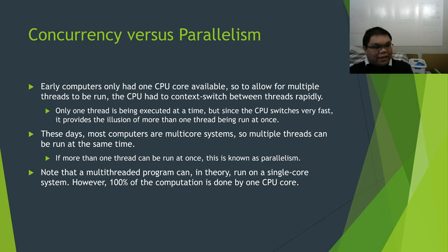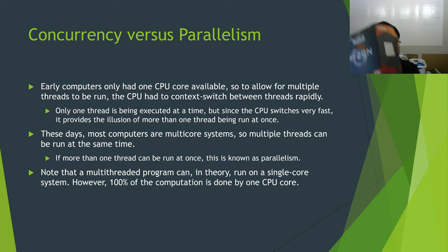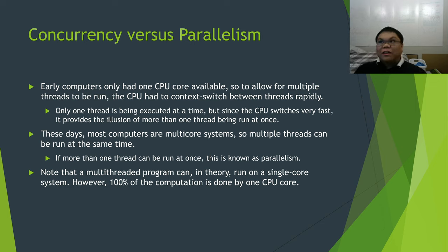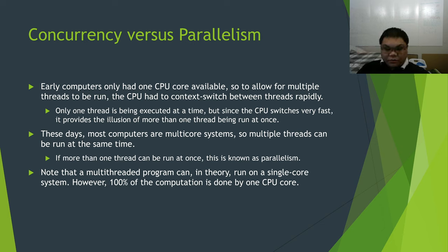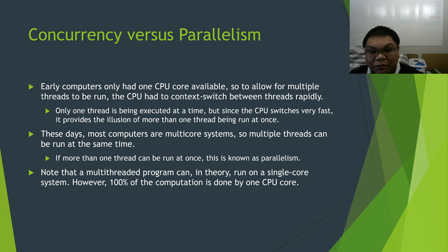These days we have multi-core CPUs — 8 cores, 16 cores — so we can run multiple threads or multiple processes at the same time. If we can run more than one thread at a time and the threads are part of the same program, we basically have parallelism. You can run a multi-threaded program on a single-core system, but all the computation still has to be done by that single core.